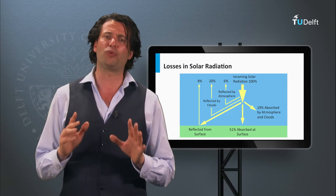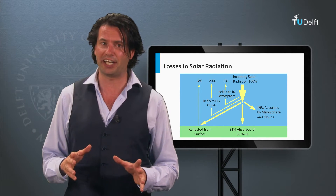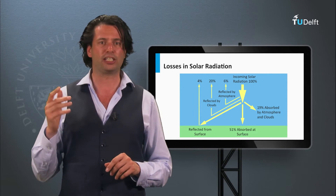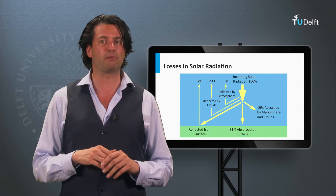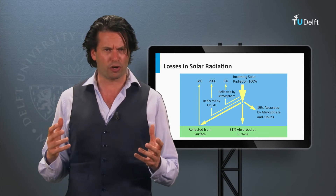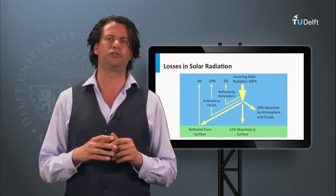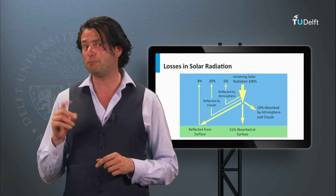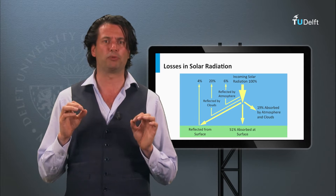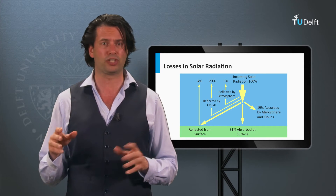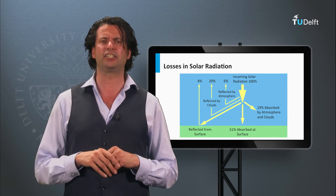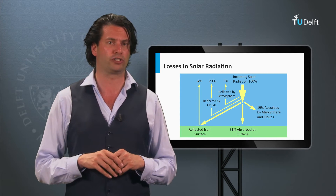On average, around 20% of the solar irradiation is reflected by clouds, 6% by the molecules in the atmosphere, and 4% by the Earth's surface — so in total, 30% is lost due to reflection. 19% of the irradiation is lost due to absorption by clouds, particles, and molecules in the atmosphere. 51% of the irradiation is absorbed at the Earth's surface.